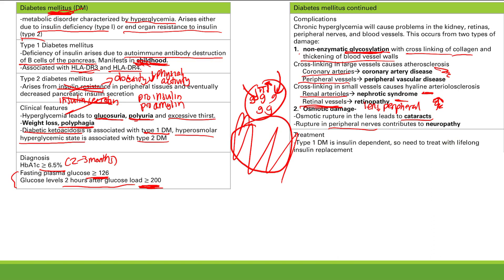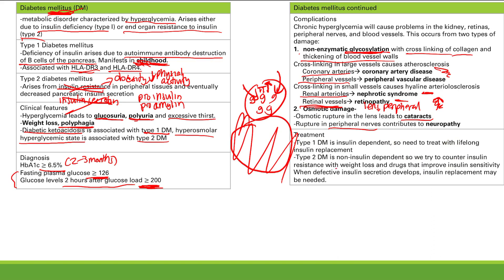Type 2 is non-insulin dependent because the body still makes insulin. The whole problem in type 2 is insulin resistance, so we try to counter that. First, we try to counter it with weight loss and increased physical activity — since obesity and lack of physical activity lead to insulin resistance. You also have drugs that improve insulin sensitivity, specifically things like metformin.